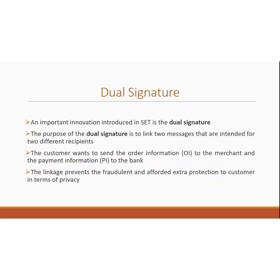Let's start with dual signature. Dual signature is a concept introduced with SET which aims at connecting two pieces of information intended for two different receivers. That is OI — the order information for the merchant — and PI — the payment information for the bank. Sending them separately is easy but not secure; sending them in a connected form resolves future dispute. That is the generation of dual signature.